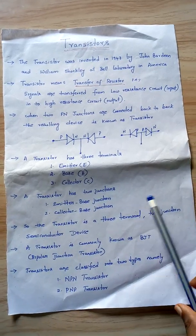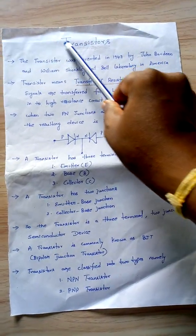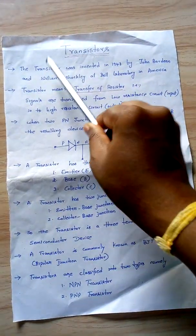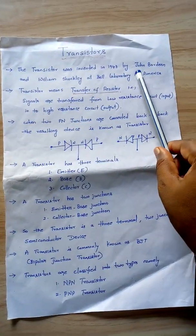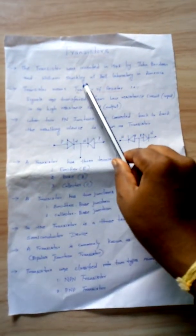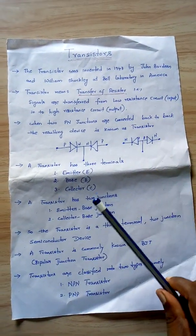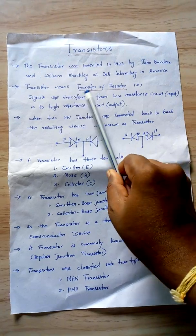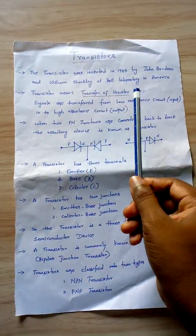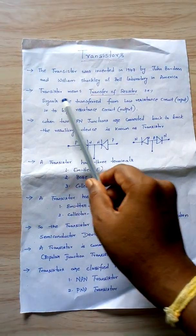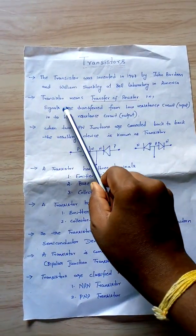Welcome to basic electronics. In this session I am going to explain about transistors. Transistor was invented in 1947 by John Bardeen and William Shockley at Bell Laboratory in America. Generally, transistor means transfer of resistor, which means the signal is transferred from low resistance to high resistance.